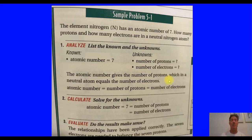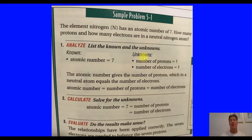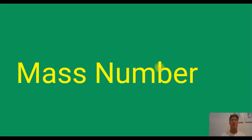Sample problem: the element nitrogen has an atomic number of seven. How many protons does it have? How many electrons does it have in a neutral atom? This is simple — we know the atomic number equals the proton number, which equals the electron number. Seven protons, seven electrons.